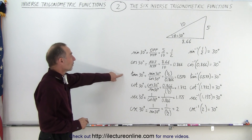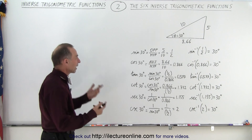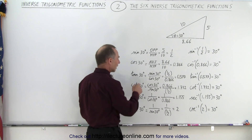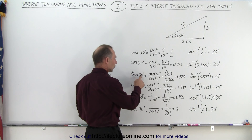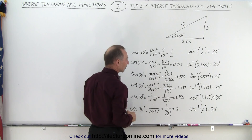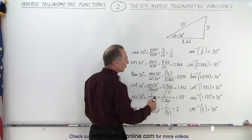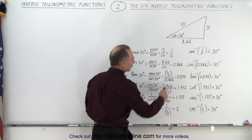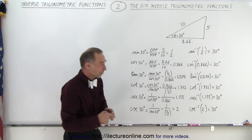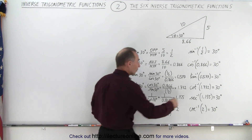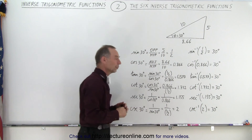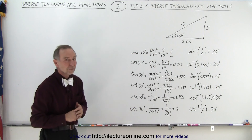The tangent of an angle is defined as the ratio of the sine over the cosine. In the case of the angle being 30 degrees, that would be one half divided by 0.866, which is equal to 0.577. So if we take the inverse tangent of 0.577, we get back the angle of 30 degrees.